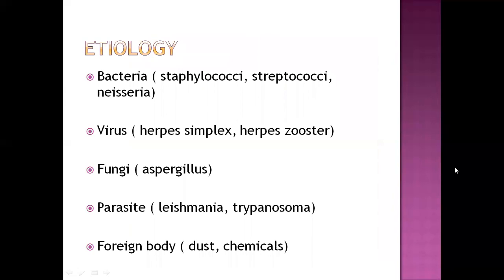The etiology for this disease includes bacteria, virus, fungi, parasites, and foreign bodies. Bacteria like staphylococci, streptococci, and Neisseria cause keratitis. Viruses like herpes simplex and herpes zoster cause keratitis. Fungi like Aspergillus, and parasites like Leishmania and Trypanosoma also cause keratitis. Foreign bodies such as dust and chemicals can cause keratitis as well.